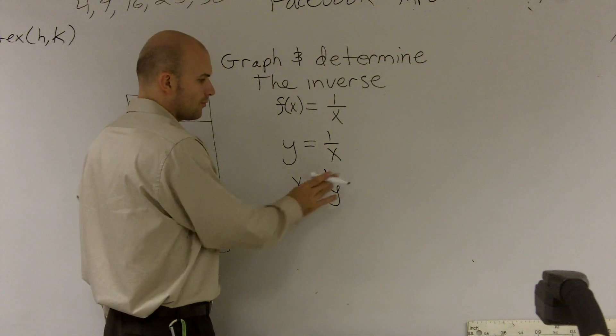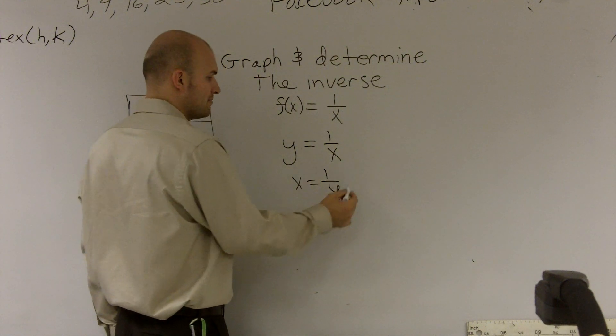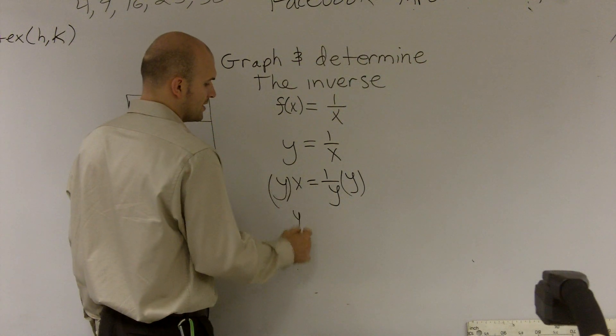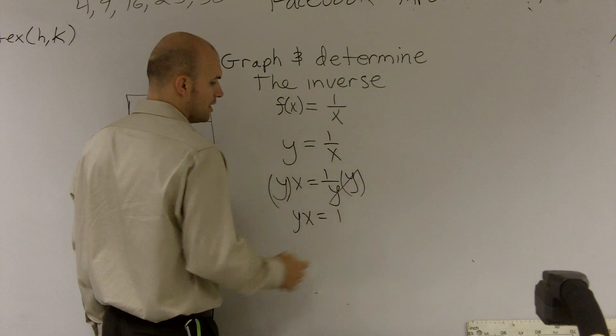Then from here, to solve for y, I need to first get y off the bottom. So I'm going to multiply by y on both sides. Therefore, I get yx is equal to 1.